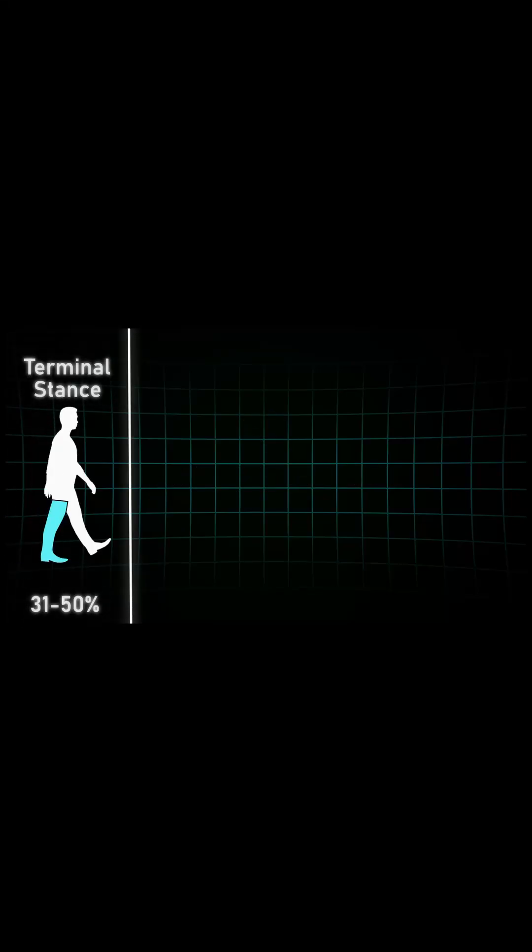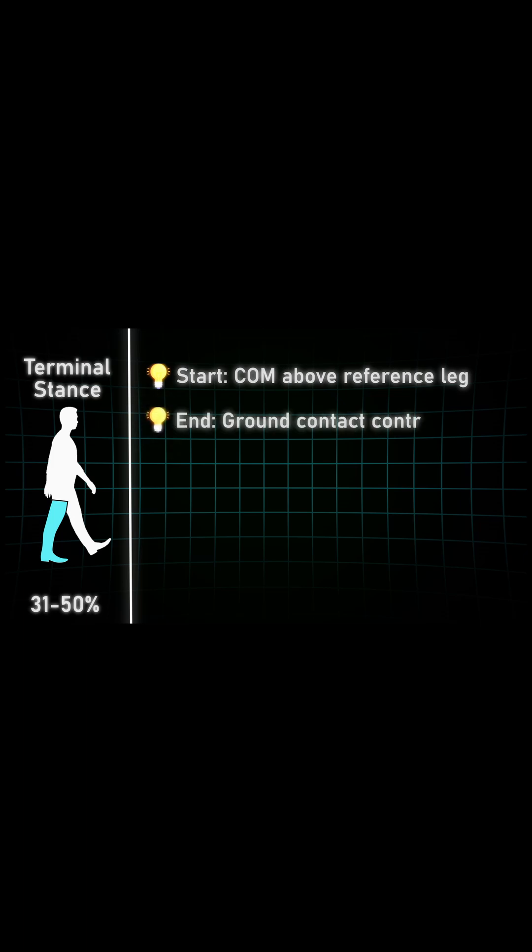Now let's look at the terminal stance phase. It begins where the last phase ended—the center of gravity is above our supporting leg—and it ends when the contralateral side has ground contact.